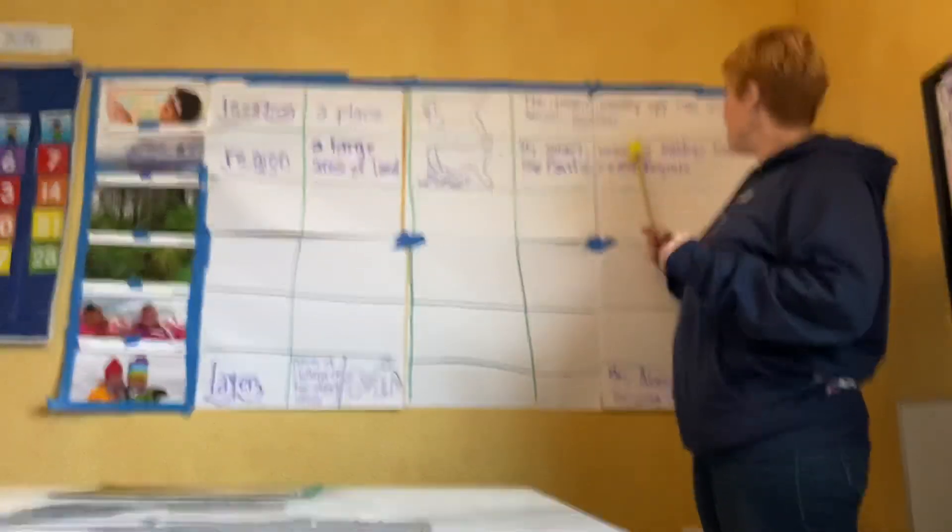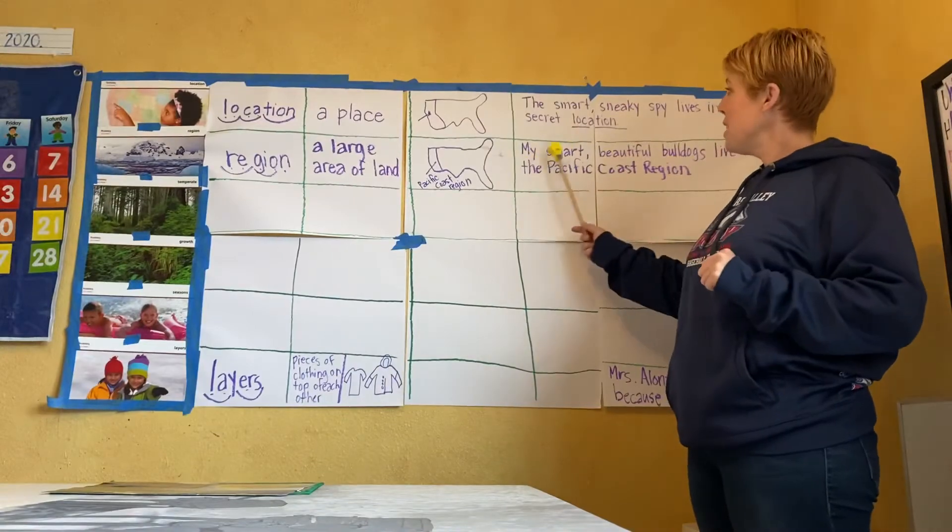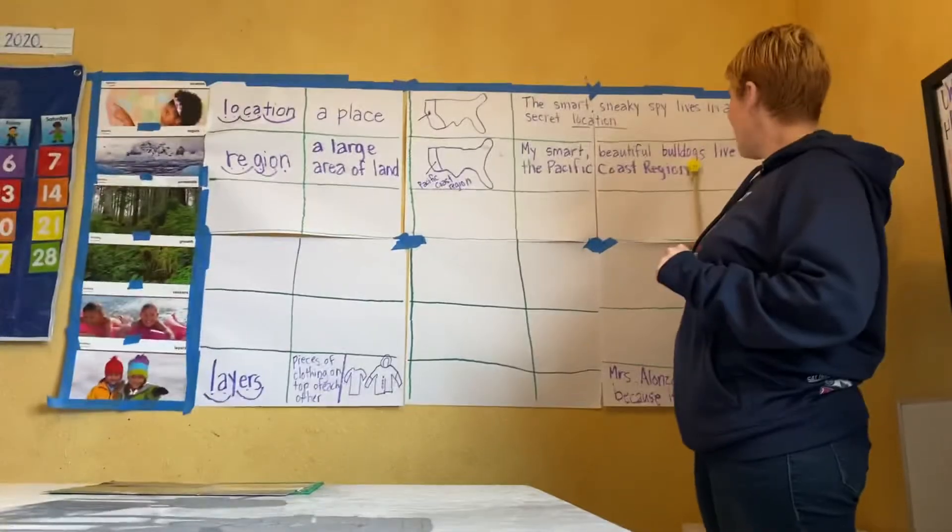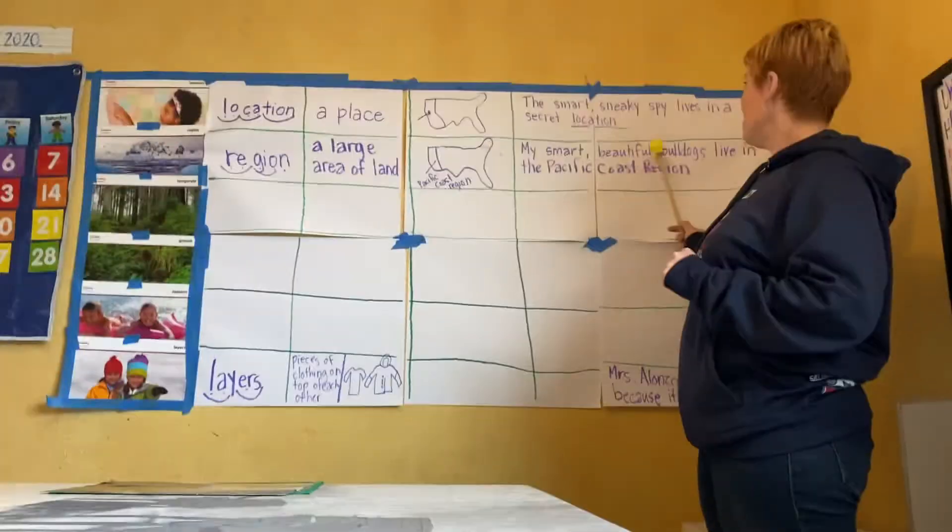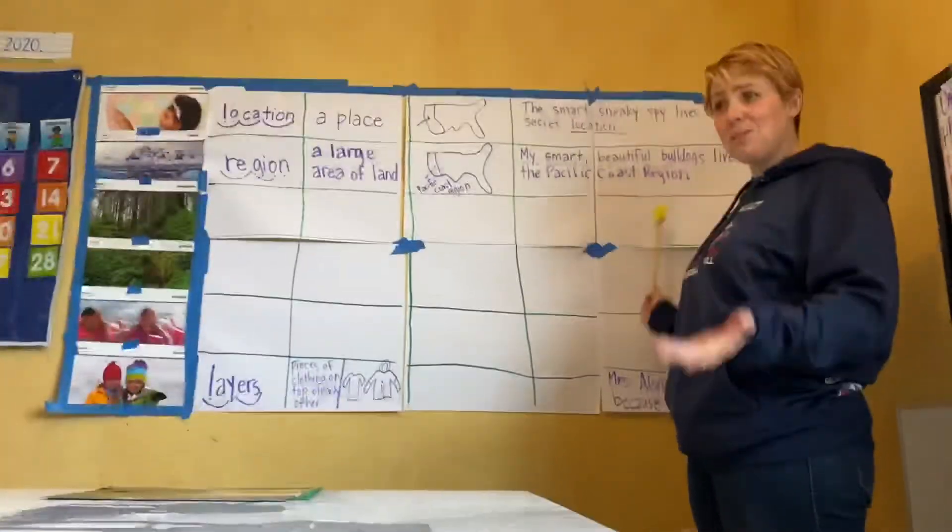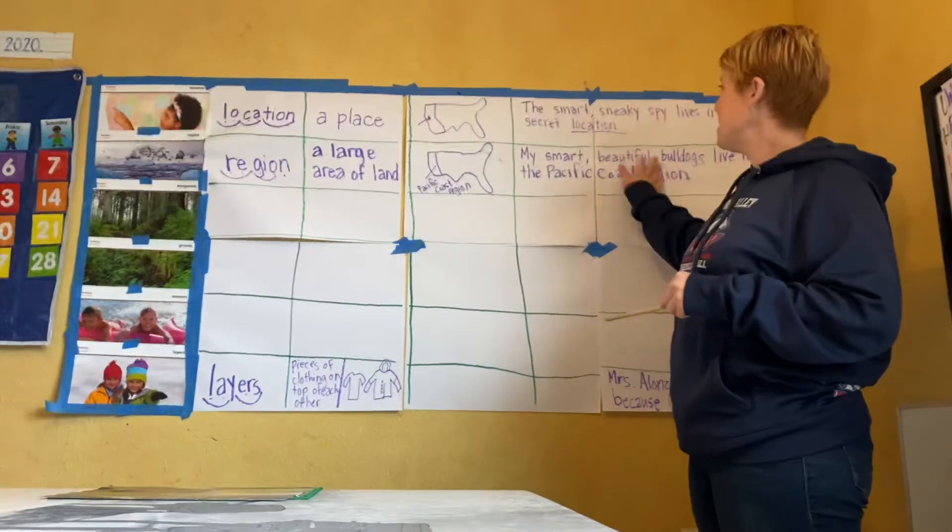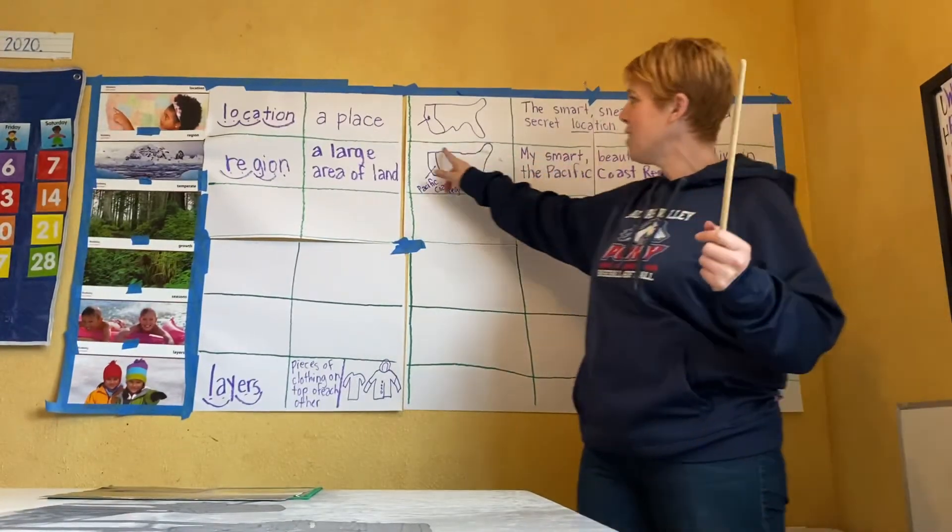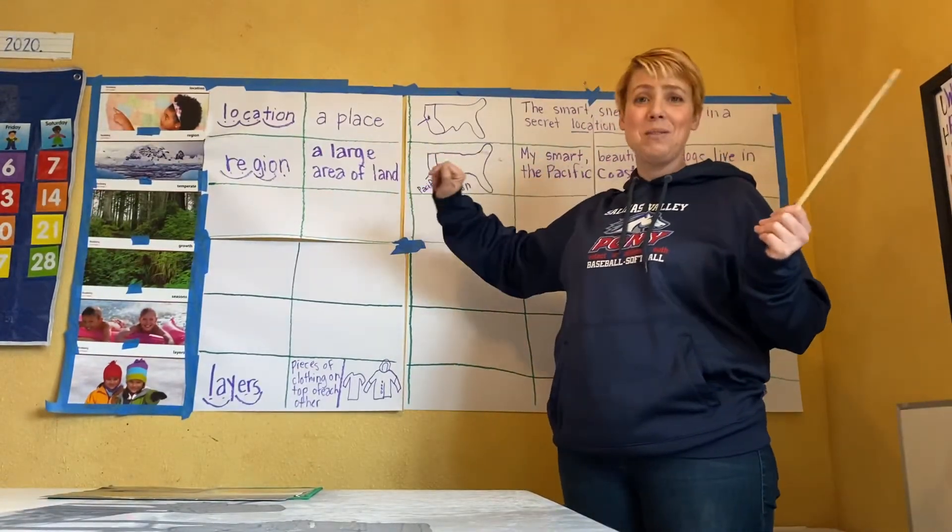My smart, beautiful bulldogs. My smart, beautiful bulldogs. My smart, beautiful bulldogs live in the Pacific Coast region. So we said they live in that large area of land that's along the Pacific Coast.